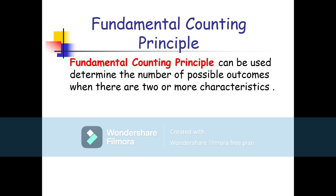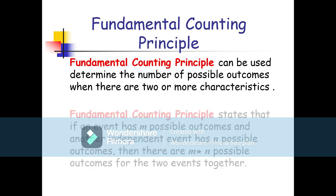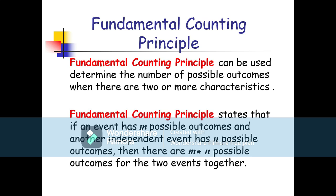The fundamental counting principle can be used to determine the number of possible outcomes when there are two or more characteristics. It states that if an event has m possible outcomes and another independent event has n possible outcomes, then there are m multiplied by n possible outcomes for the two events together. If we have two or more characteristics, then we multiply them.